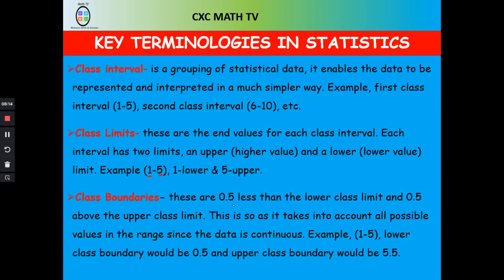For example, if you have categories 1 to 5, 6 to 10, and 11 to 15 — where would a data value of 10.4 lie? It would lie in the 6 to 10 interval. A value of 10.6 would lie in 11 to 15, because that interval effectively starts from 10.5. The 11 to 15 interval spans from 10.5 up to 15.49, covering all numbers in that category. That's why we add or subtract 0.5.